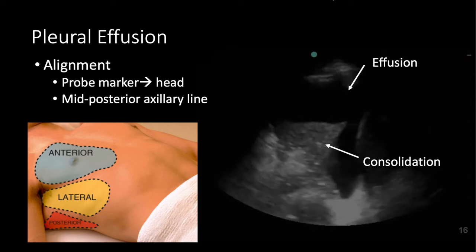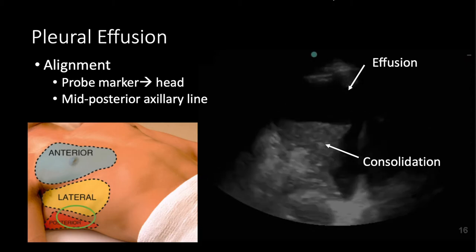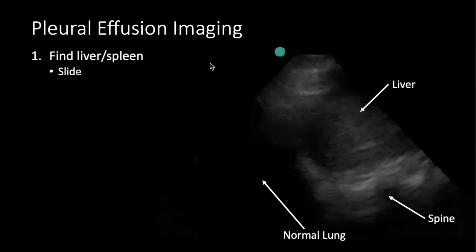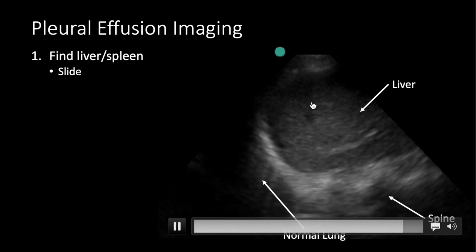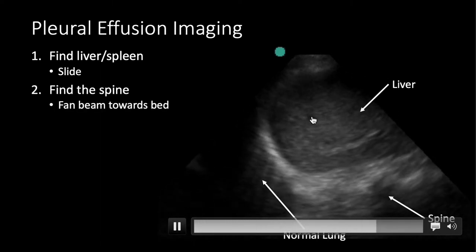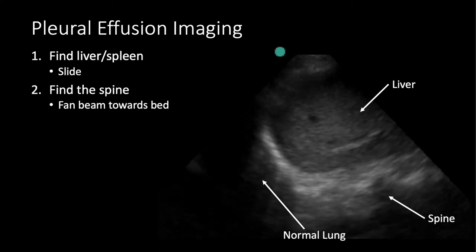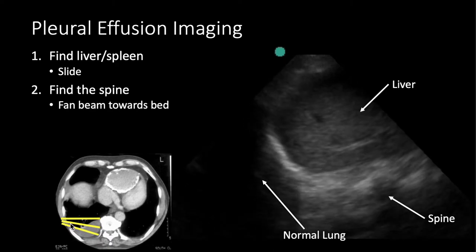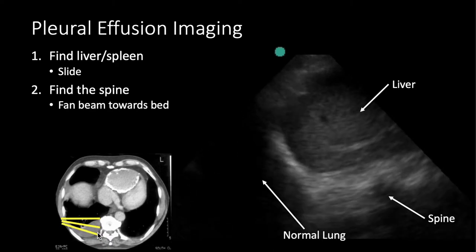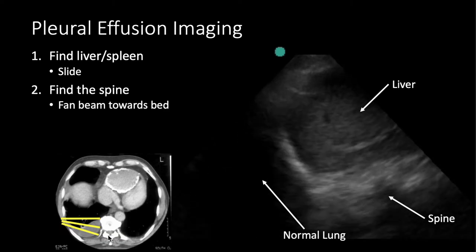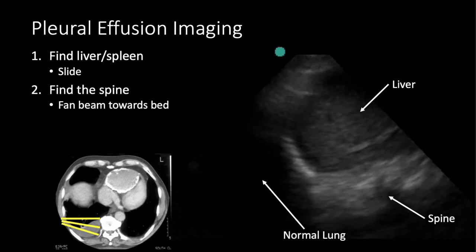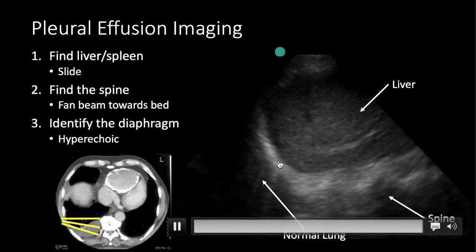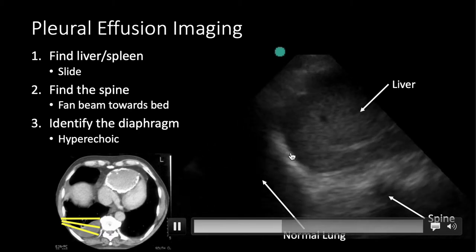To find pleural effusions, work in the lateral to posterior zone, pointing the probe marker towards the head in the mid-posterior axillary line. Slide to find the liver or spleen first — that's the key landmark. Then fan the beam towards the diaphragm to identify the spine. You may need to slide towards the bed and fan the beam down to pick up the spine in the pleural effusion in this gravity-dependent fashion. Next, identify the diaphragm as the bright white hyperechoic line on top of the liver or spleen.